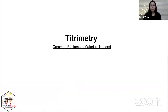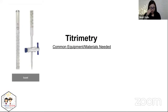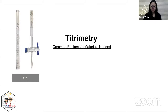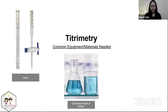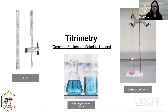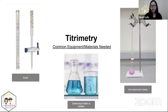Common equipment and materials needed include a burette — normally in the lab you use a 50 mL Class A burette to get accurate measurements. For your receiving container you have either an Erlenmeyer flask or a beaker. You also need an iron stand and clamp to hold the burette. Sometimes the iron stand has a white background, which helps you clearly see the first sign of color change by the indicator.